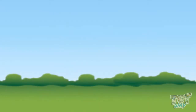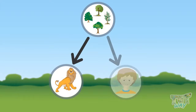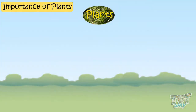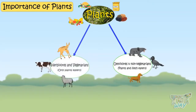We know how important plants are for all animals and human beings. Plants are the primary source of food for all living beings. Plants provide food like fruits, vegetables, cereals, and pulses for omnivores and herbivores.